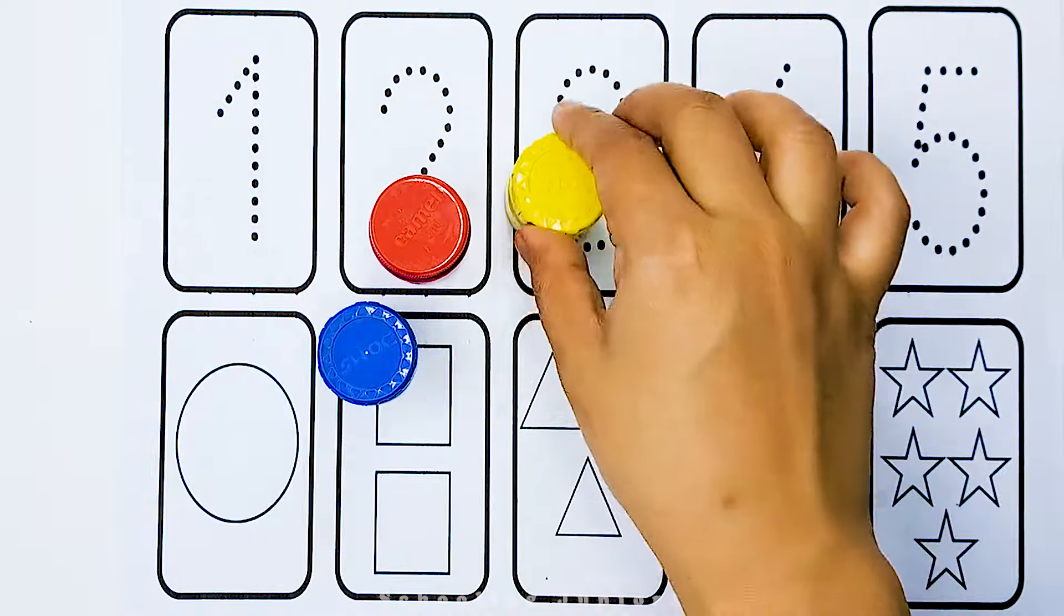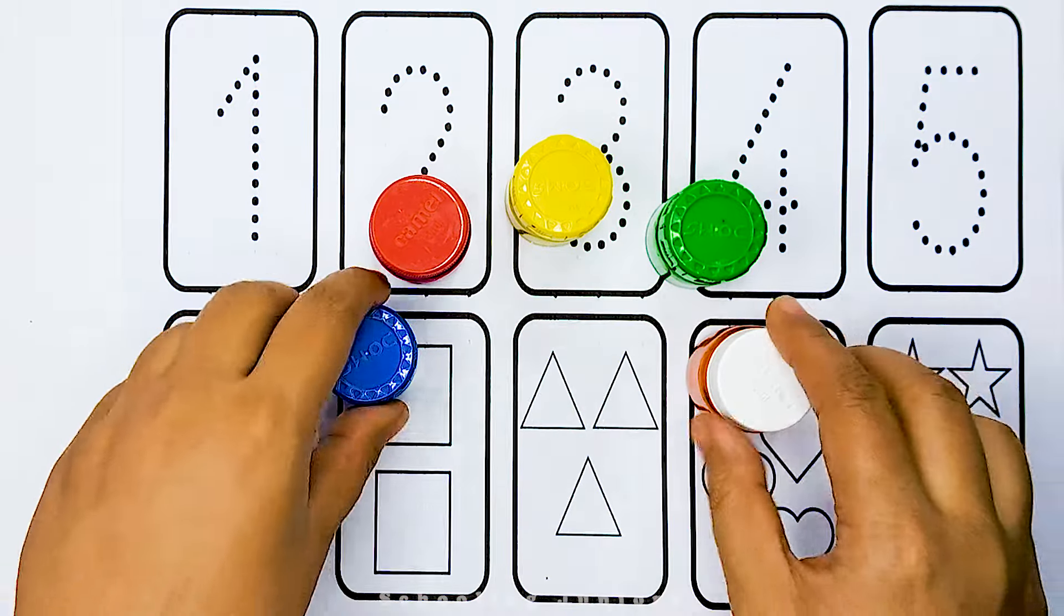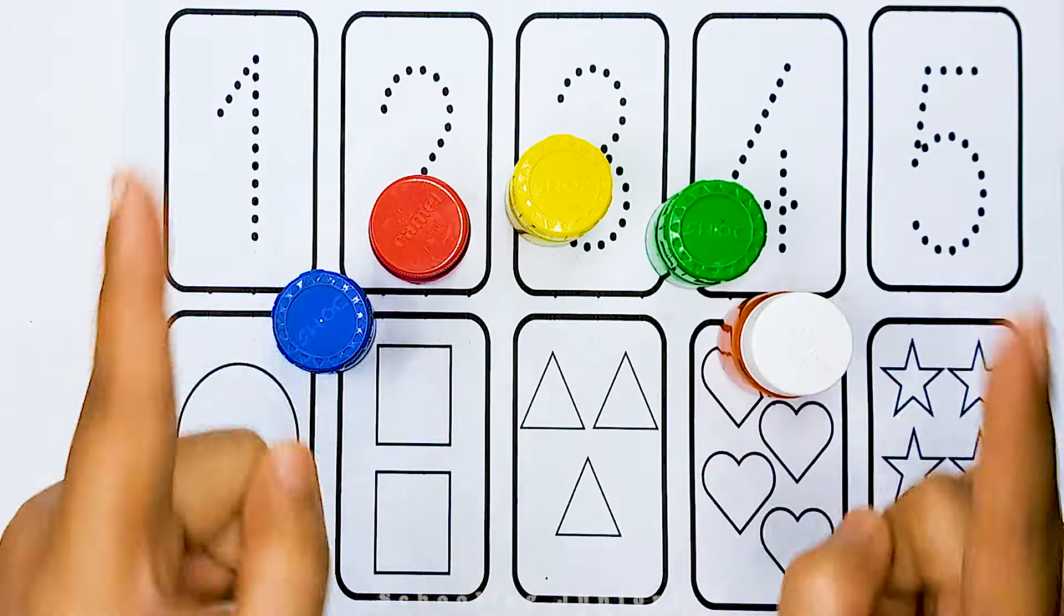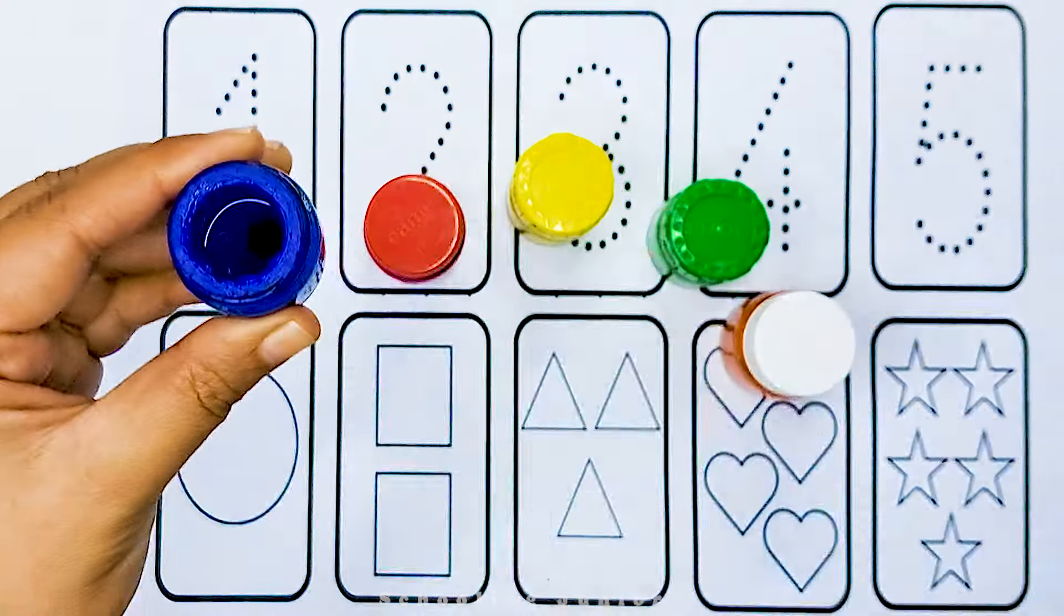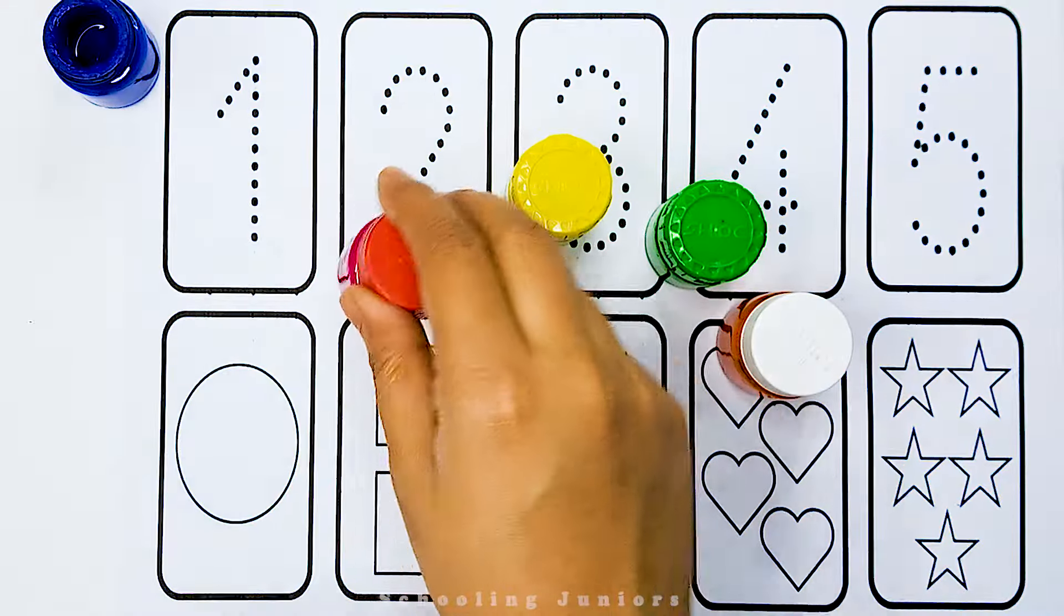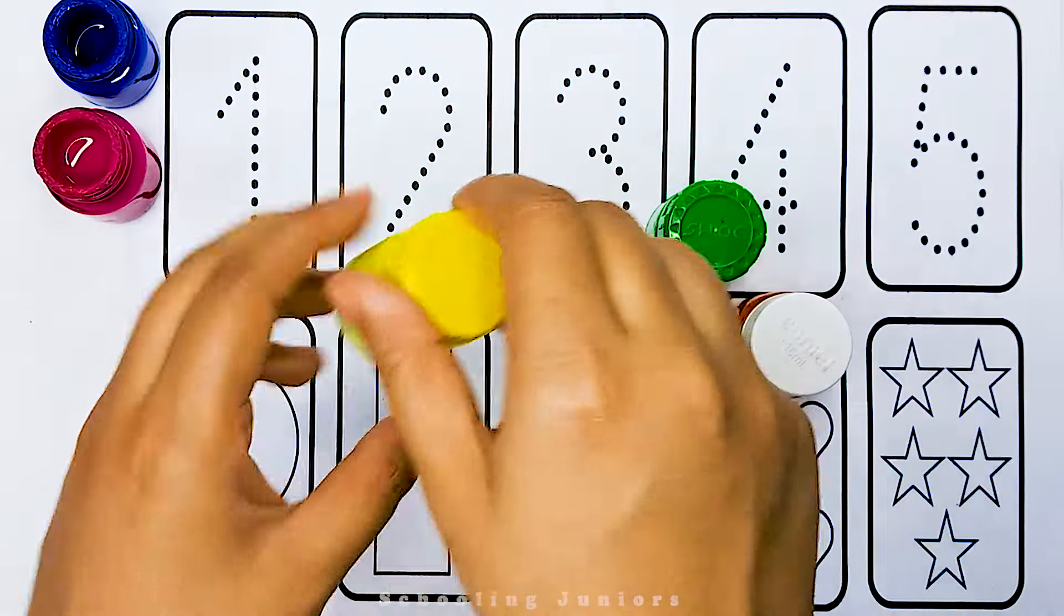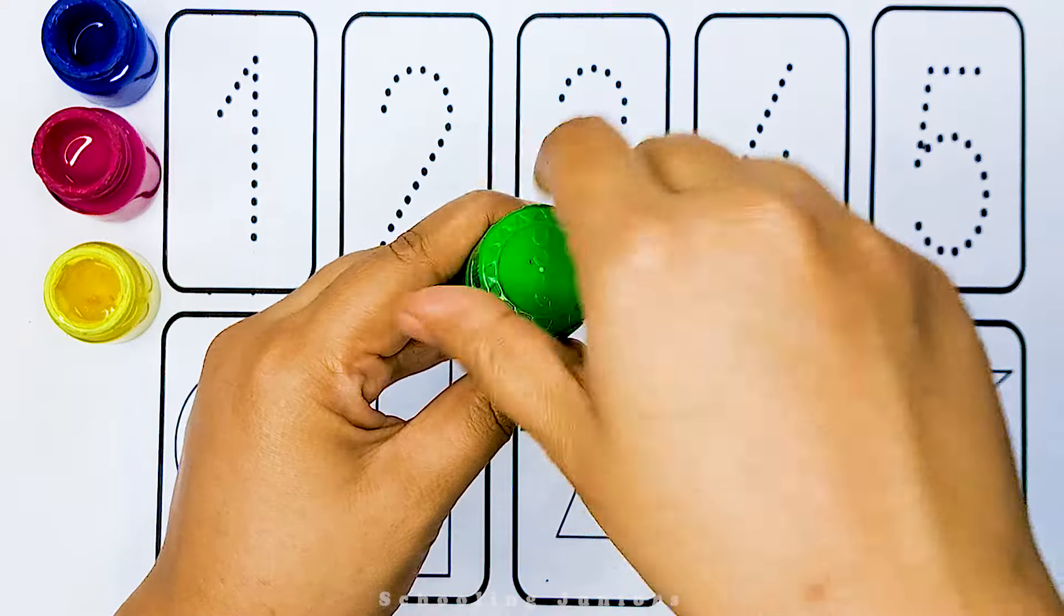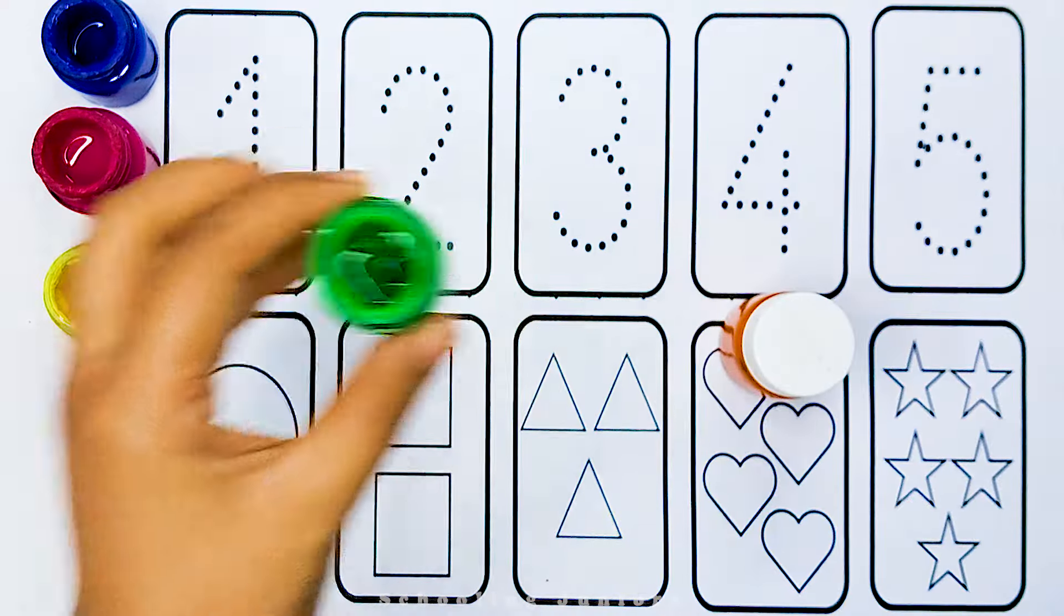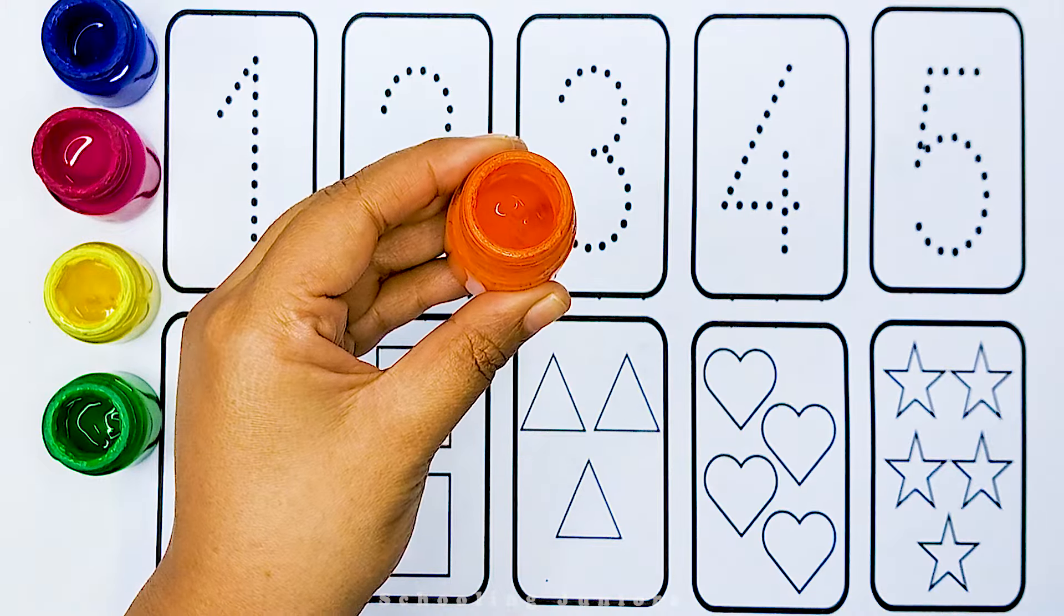Let's get started. This is our colors. Let's learn some color names. Blue color. Pink color. Yellow color. Green color. Orange color.